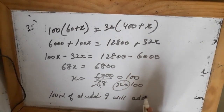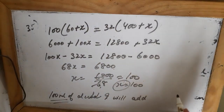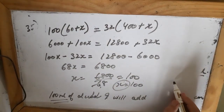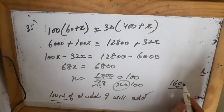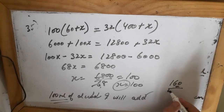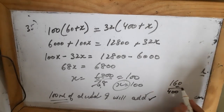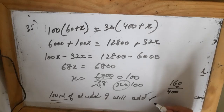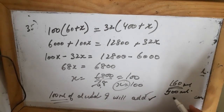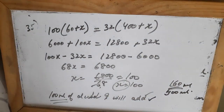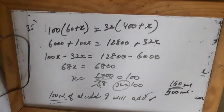So 100 ml of pure alcohol must be added. After adding 100 ml, the total alcohol becomes 60 plus 100 equals 160 ml and the total solution becomes 400 plus 100 equals 500 ml. Verification: 160 upon 500 equals 32%, which confirms the answer.